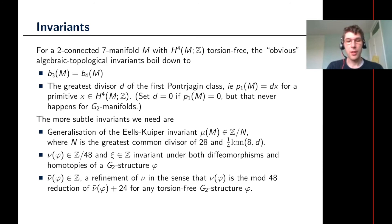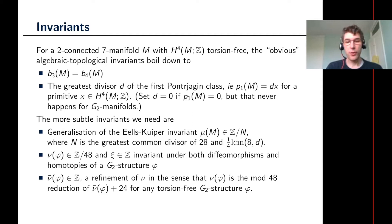Those are just homeomorphism invariants of the seven-manifold. But what we need in order to prove our results are some more subtle invariants. First, we have a generalization of the Eells–Kuiper invariant, which can detect different smooth structures. The classical Eells–Kuiper invariant of a seven-manifold can take 28 different values and distinguish between 28 different smooth structures, but that only works when the first Pontryagin class is zero — which never happens for G2 manifolds. Dermot Crowley and I found a way to generalize this to the situation where the first Pontryagin class is non-zero, though it may then distinguish only some smaller number of smooth structures.